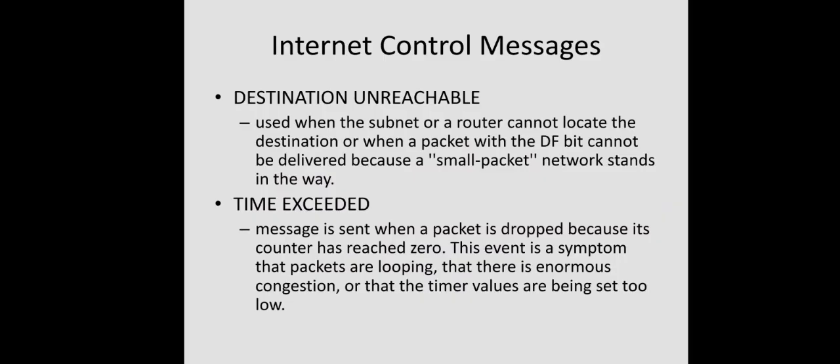Destination unreachable is an error message generated when a router finds it cannot locate the destination machine - either the link is broken, the destination machine is down, or for some other reason the packet cannot be delivered. The router sends a destination unreachable message back to the source. Another reason for this message is when a router sees that the packet carries a 'don't fragment' bit, but the packet must be routed through a network with a smaller maximum packet size. Since it cannot be fragmented, the router generates a destination unreachable message.